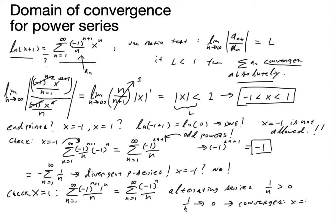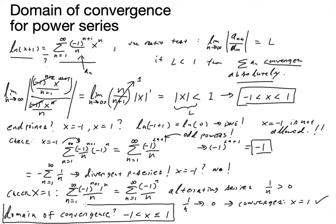So x equals 1 is allowed. The domain of convergence is: negative 1 is not included, but x equals 1 is included, giving the interval (-1, 1]. We've done a thorough analysis to prove it. On an exam or homework, what I really want to see is this kind of analysis: use the ratio test to find the initial interval of absolute convergence, then check the endpoints.